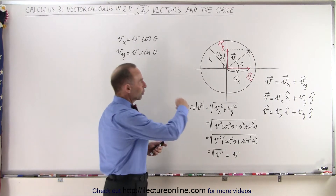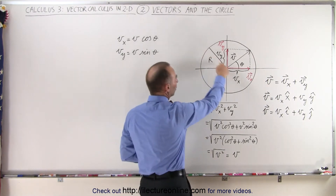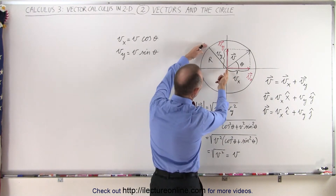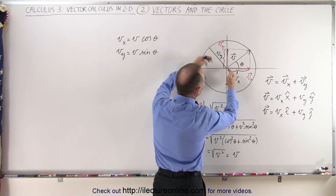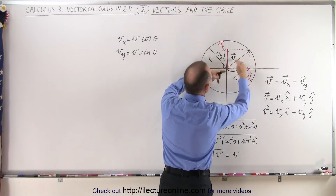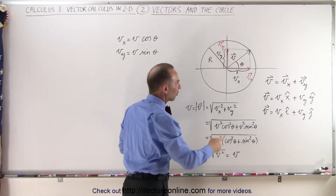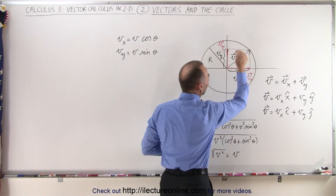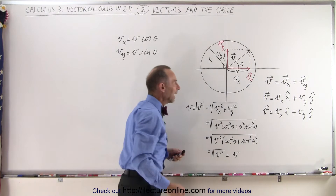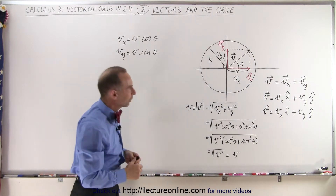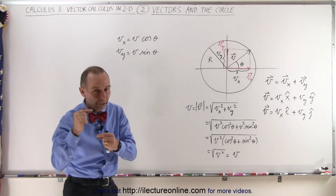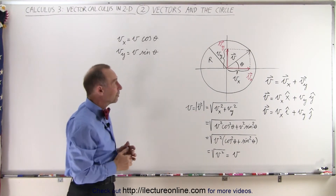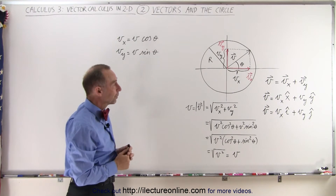Here we have a circle of radius r, and it turns out that radius r is equal to the magnitude of the vector v. We have a vector that starts at the origin and ends at the edge of that circle, so therefore the length of that vector must equal the radius of the circle.